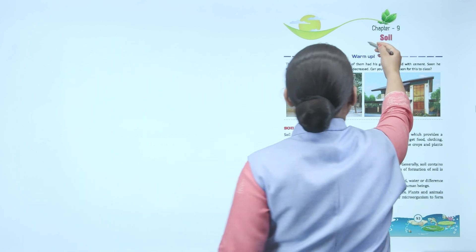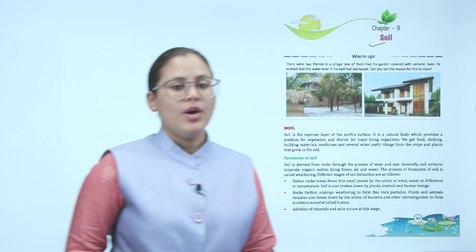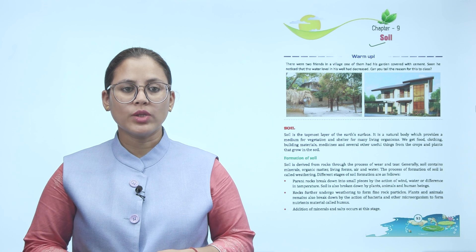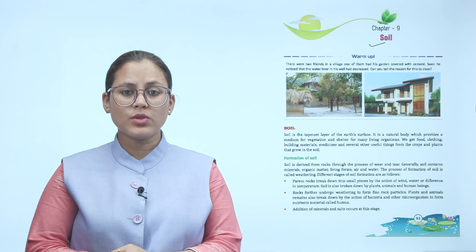Hello children, hope you are all doing good. Let's start today's chapter: Soil. Warm up: There were two friends in a village. One of them had his garden covered with cement. Soon he noticed that the water level in his well had decreased. Can you tell the reason for this?